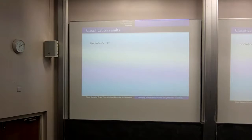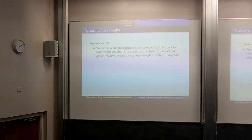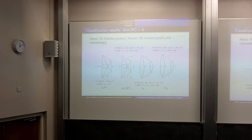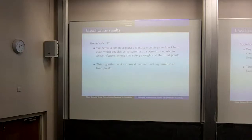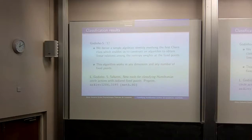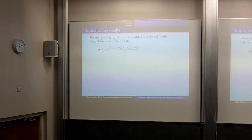Together with Godinho, we found another way out that applies to any dimension and any number of fixed points. We derived a simple algebraic identity involving the first Chern class, enabling an algorithm to obtain linear relations among the isotropy weights — relations like: this weight is A, B, C, and this is the sum A+B, etc. This algorithm works in any dimension and any number of fixed points. I will now show you how the algorithm works — running the program in front of you.